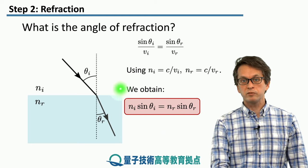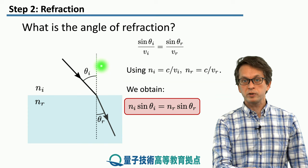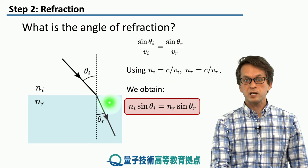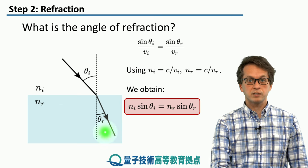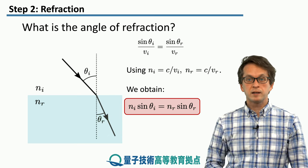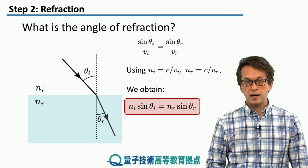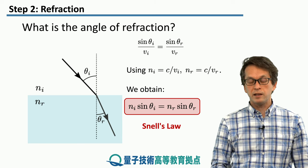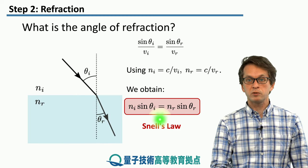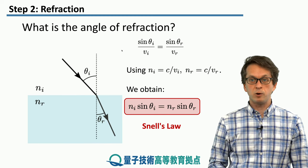The refractive index of the medium on top times the sine of the incident angle θ_i equals the product of the refractive index of the new medium times the sine of the angle of refraction. This is known as Snell's law. This law is very useful and we're going to use it extensively in this and following lessons.